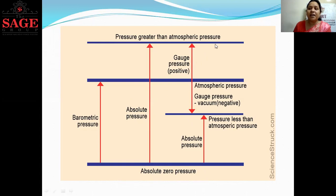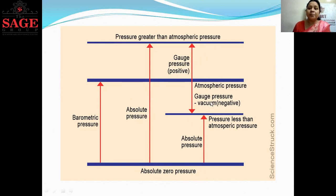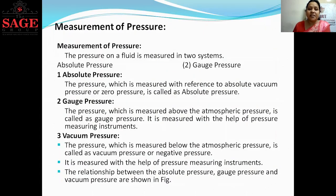We consider two points: one is above the atmospheric pressure, meaning above the datum surface, and another is below the atmospheric pressure. Any point below the atmospheric pressure is called vacuum pressure, meaning negative pressure. So, absolute pressure is the pressure measured with reference to absolute vacuum pressure or zero pressure line.